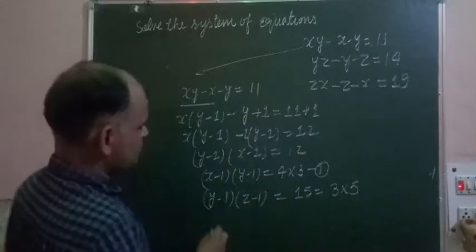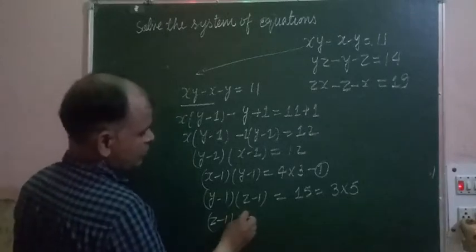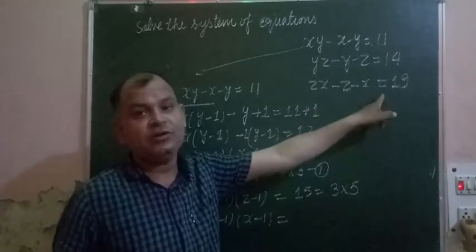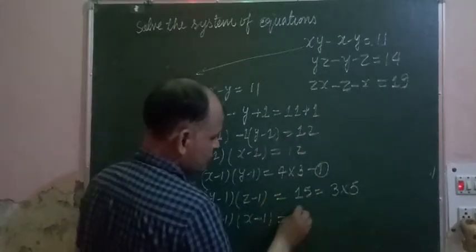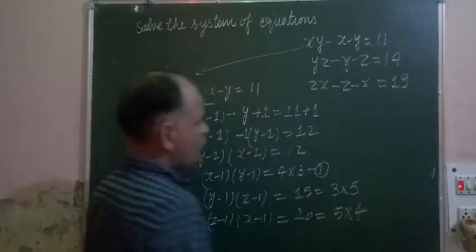Now for the third equation, (z - 1)(x - 1) equals 19 plus 1, which is 20. This can be written as 5 × 4.